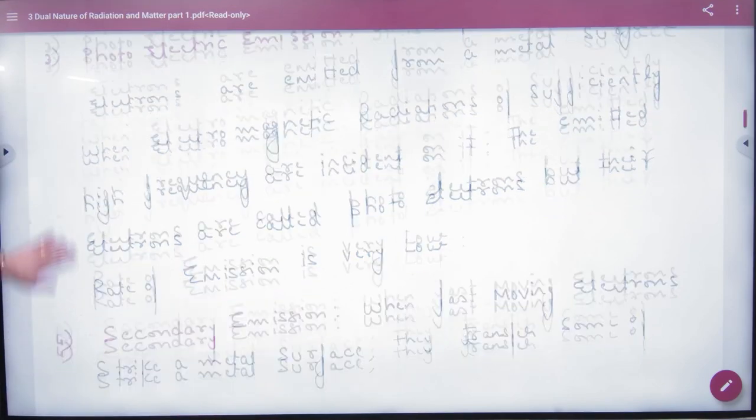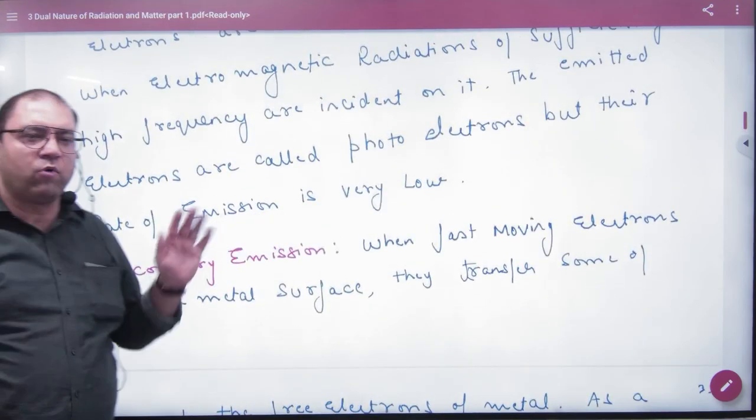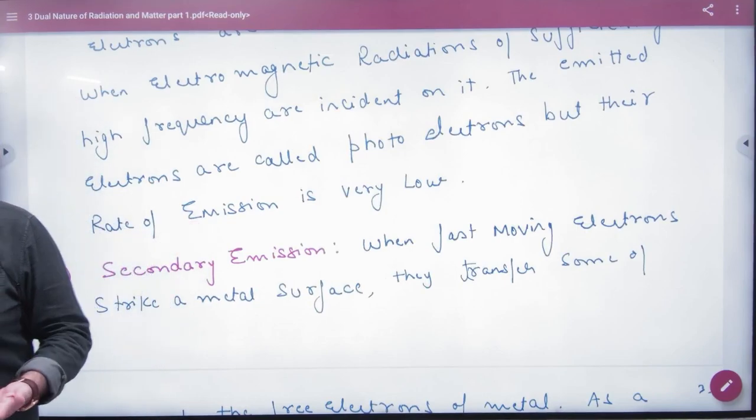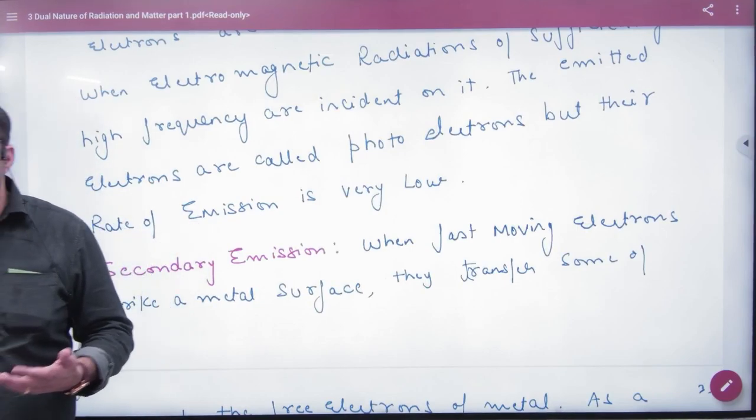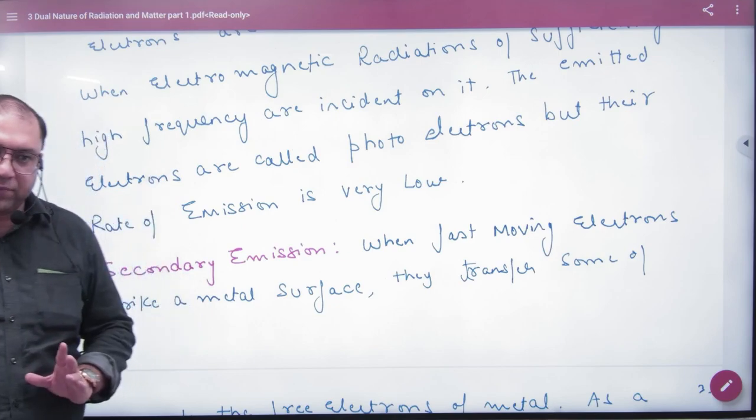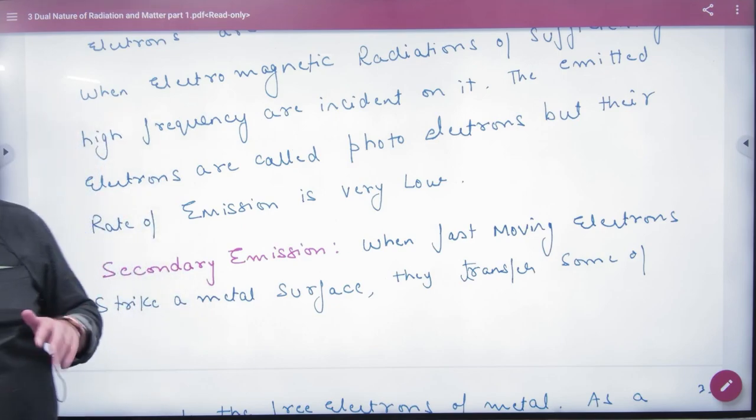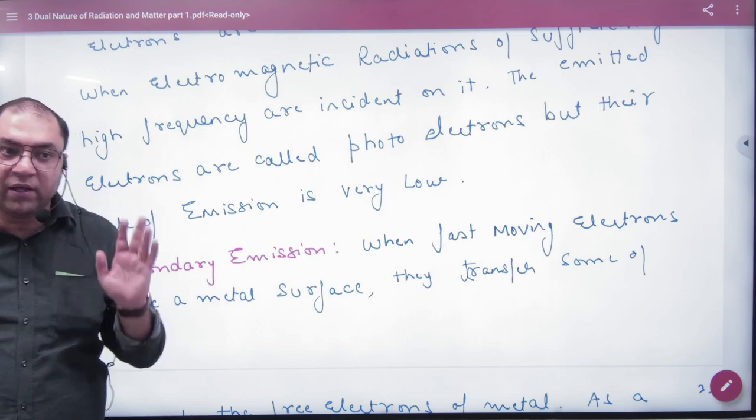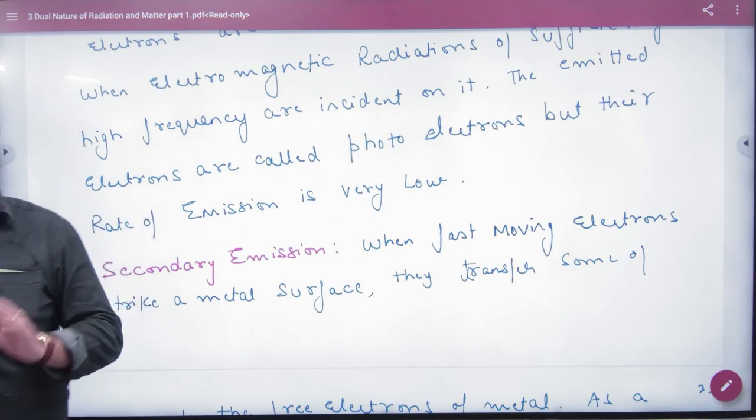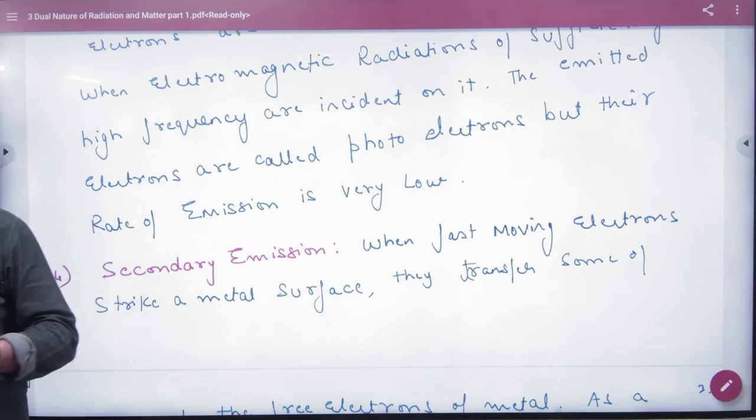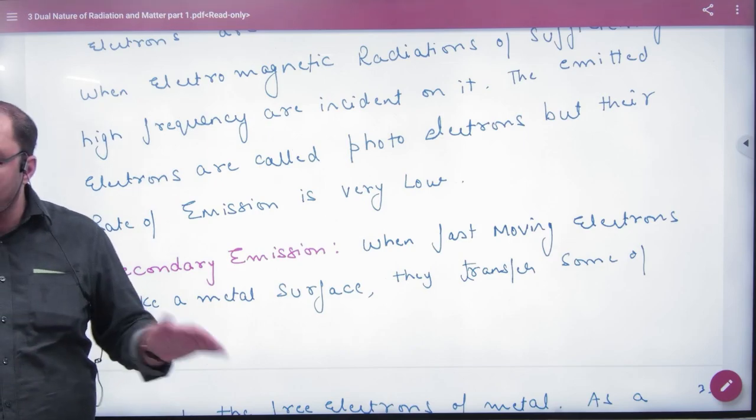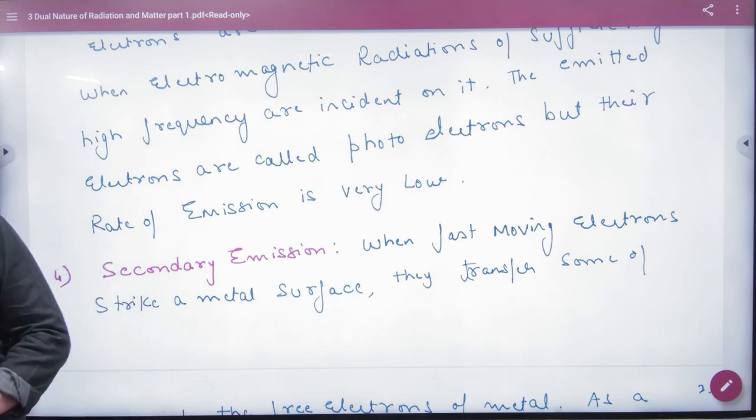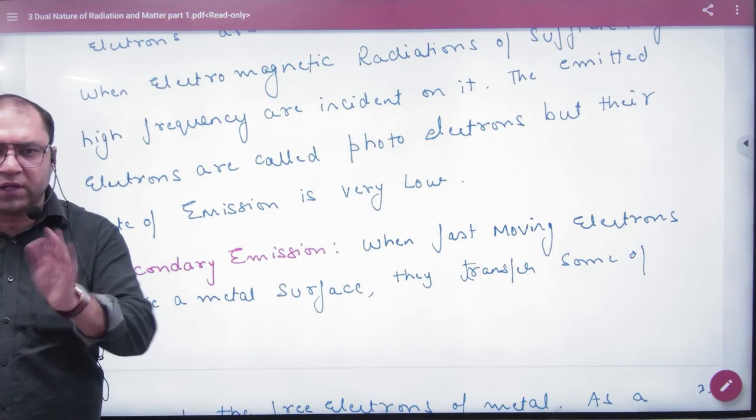So this is also a way. But the rate of emission is very low. If you have 100 photons, one electron comes out. One percent comes out. We call it photoelectric effect.